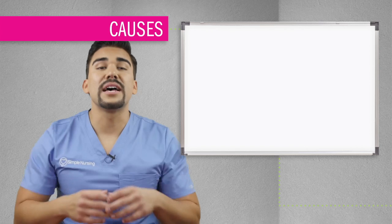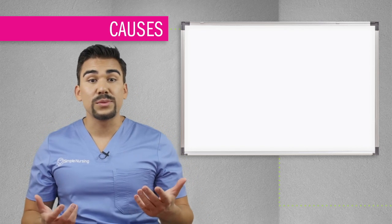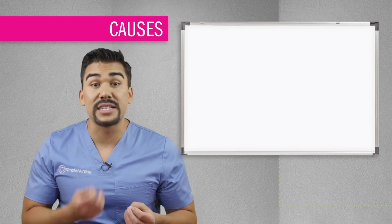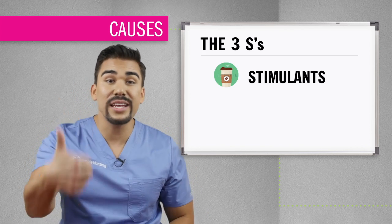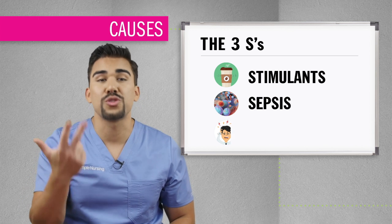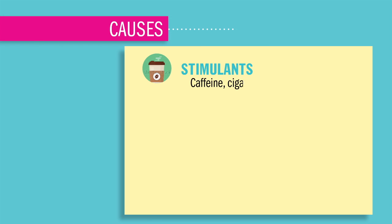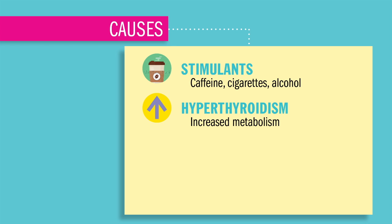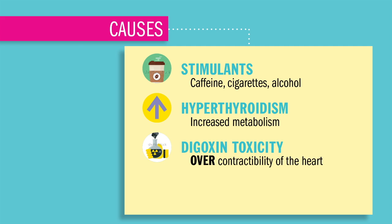All these premature contractions are happening way too early and basically just contracting prematurely. Now what are the causes of premature contractions? The main causes are quite simple — it's the three S's: stimulants, sepsis, and stress. Stimulants like caffeine, cigarettes, and even alcohol — I call it the three Wisemen. But even hyperthyroidism can cause an increased metabolism, and digoxin toxicity can play a factor in over-contractility of the heart.